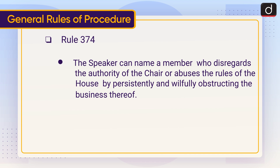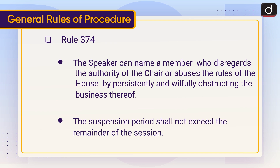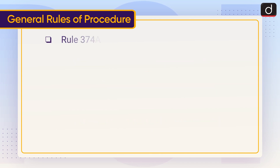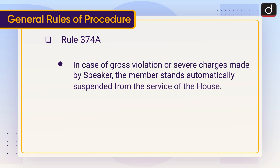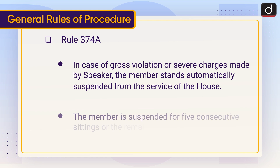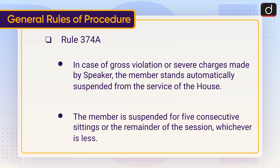The suspension period under Rule 374 shall not exceed the remainder of the session. Rule 374A: in case of gross violation or severe charges made by the Speaker, the member stands automatically suspended from the service of the house. The member is suspended for five consecutive sittings or the remainder of the session, whichever is less.